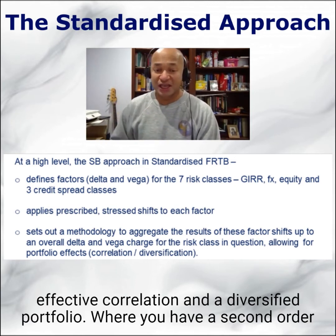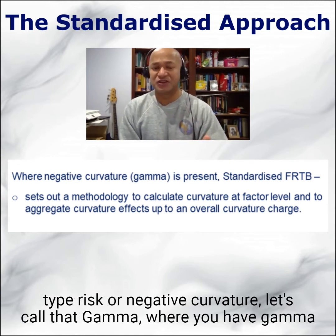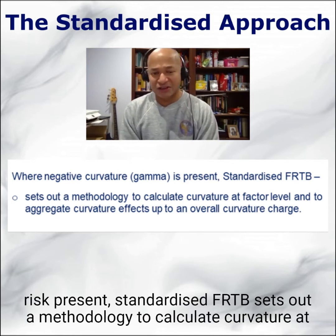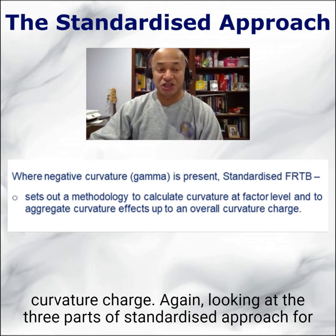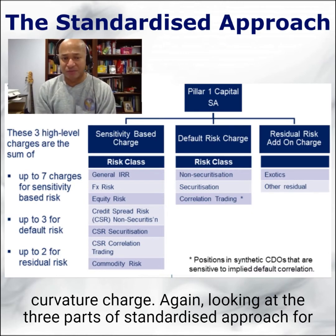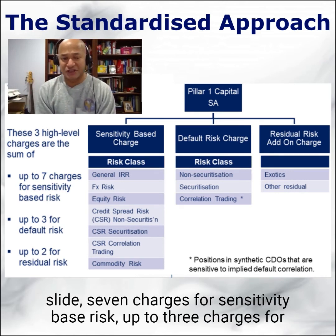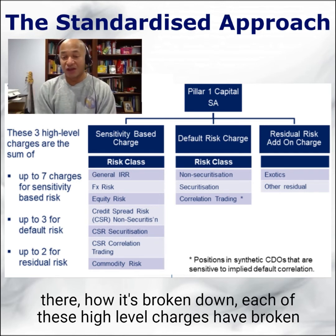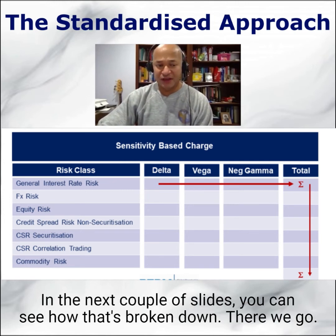Where you have second-order type risk or negative curvature — let's call that gamma — standardized FRTB sets out a methodology to calculate curvature at the factor level and to aggregate the curvature effects up to an overall curvature charge. Looking at the three parts of the standardized approach for Pillar 1, these three high-level charges are the sum of seven charges for sensitivity-based risk, up to three charges for default risk, and up to two for residual risk. You can see on slide nine how it's broken down, and let's illustrate just by way of example the sensitivity-based charge in the next couple of slides.